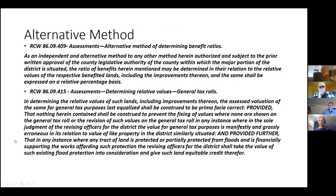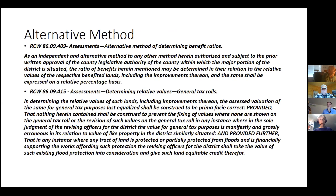This is the section out of the RCW. The main one, RCW 86.09.409, is an independent and alternate method to any other method authorized, and subject to the prior written approval of the county legislative authority. The ratio of benefits may be determined in relation to the relative values of the respective benefit lands, including their improvements thereon.